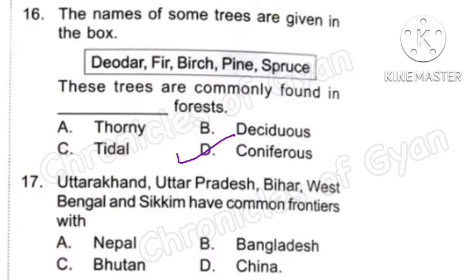Question 17: Uttarakhand, Uttar Pradesh, Bihar, West Bengal and Sikkim have common frontiers with dash. Frontiers means boundary, and these states share a common boundary with Option A, Nepal.